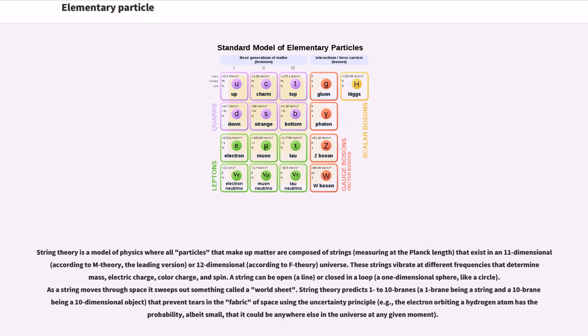String theory is a model of physics where all particles that make up matter are composed of strings, measuring at the Planck length, that exist in an 11-dimensional (according to M-theory, the leading version) or 12-dimensional (according to F-theory) universe. These strings vibrate at different frequencies that determine mass, electric charge, color charge, and spin.